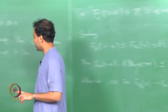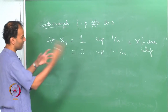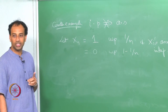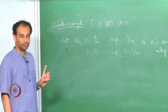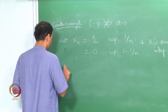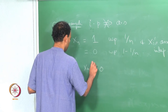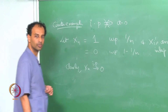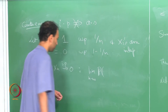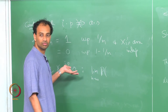The claim is that X_n converges to 0 in probability but X_n does not converge to 0 almost surely. Convergence in probability is clear: the limit as n → ∞ of P(|X_n − 0| > epsilon) equals the limit of P(X_n = 1) = 1/n, which goes to 0.